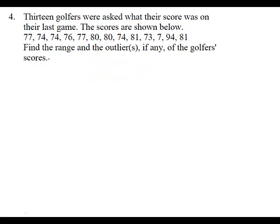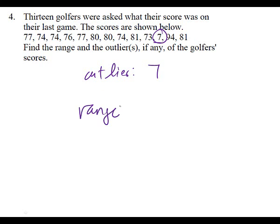We've got thirteen golfers asked what their score was on their last game. Scores are shown below. We need the range and the outliers. What's the outlier? Seven's got to be the outlier. Actually, ninety-four would be an outlier — ninety-four seems more reasonable because it's in the nineties and everything else is in the seventies and eighties, but that one's definitely an outlier. So what would my range be? Ninety-four minus seven, which is eighty-seven. Definitely looks like an outlier to me.